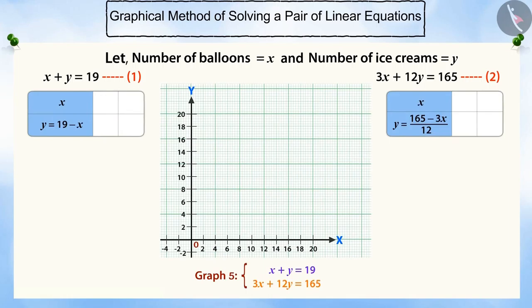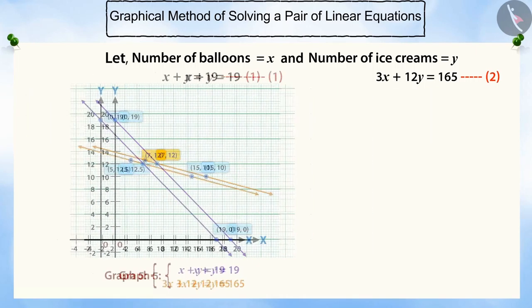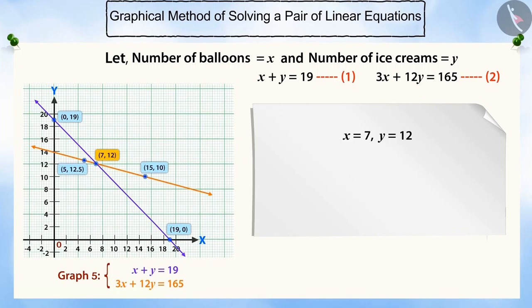To find this, in both the equations, for some values of x, find the corresponding values of y. Plot these points on a graph paper to get a pair of straight lines. Both these lines intersect at the point (7, 12), which is the only common point for both the lines. Therefore, x = 7 and y = 12 will be a solution for this pair of equations.